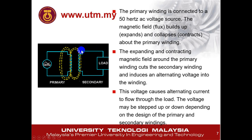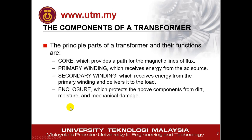You have to know how the transformer operates. Usually the marks for this type of question are around 3 to 5 marks, so you have to memorize this. The main components of a transformer are: the core, which provides the path for the magnetic flux; the primary winding, which is connected to the AC source; the secondary winding, which connects to the load; and lastly, don't forget the enclosure, which protects the components from dirt, moisture, and mechanical damage.